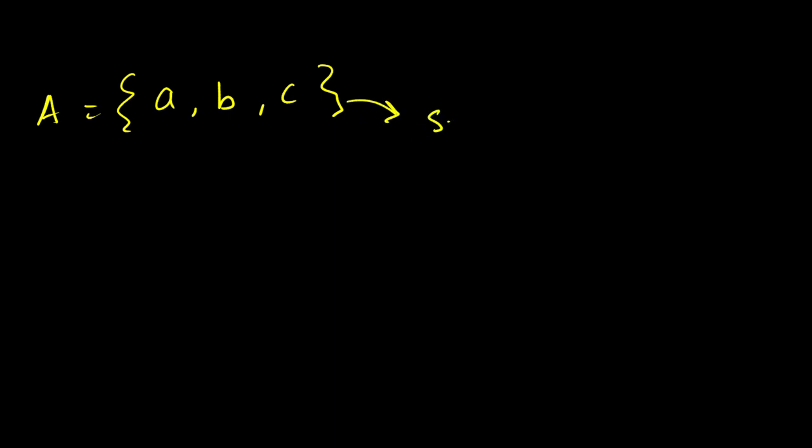All right, now these A, B, C, D and so on, you know, like individual stuff, are called elements. Okay, these are called elements. Elements, let's keep this word in mind, okay.